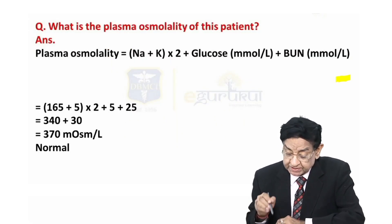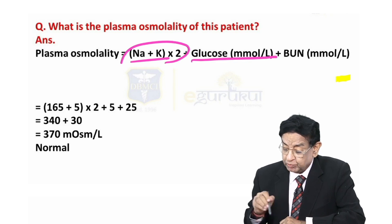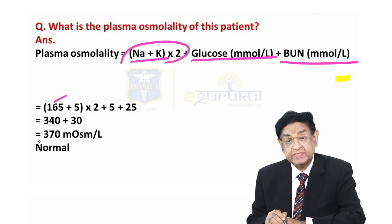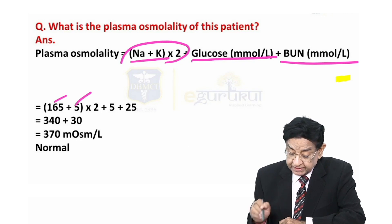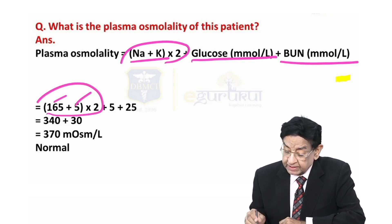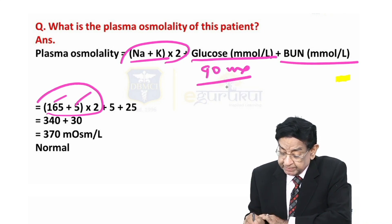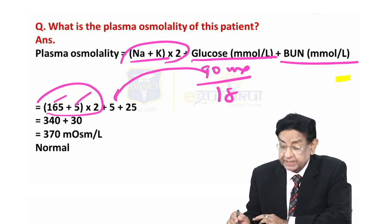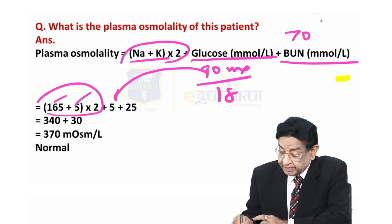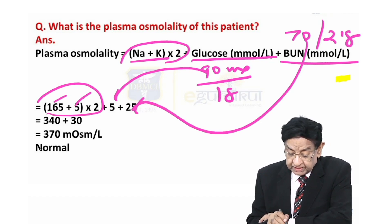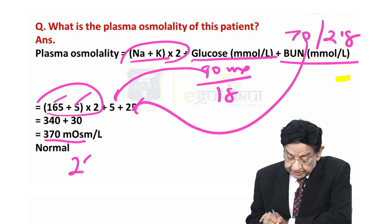Plasma osmolality is calculated as: (sodium + potassium) × 2, plus glucose in millimoles per litre, plus BUN in millimoles per litre. Here, sodium is 165, potassium is 5, multiplied by 2. Regarding glucose, it is 90 milligrams percent — divide by 18 and it comes out to be 5. Regarding BUN, it is 70 — divide by 2.8 and it comes out to be 25. So the plasma osmolality is 370. Normal is 280 to 300.